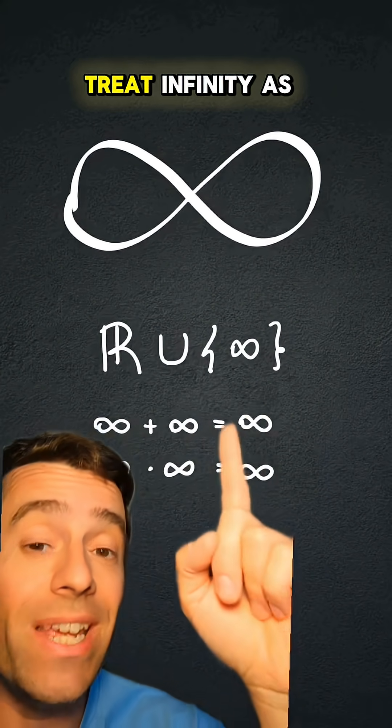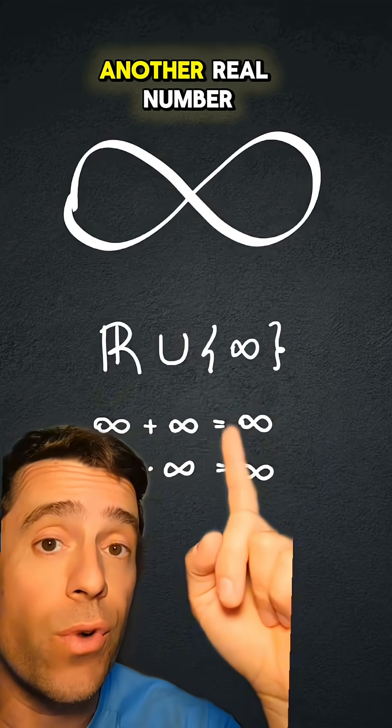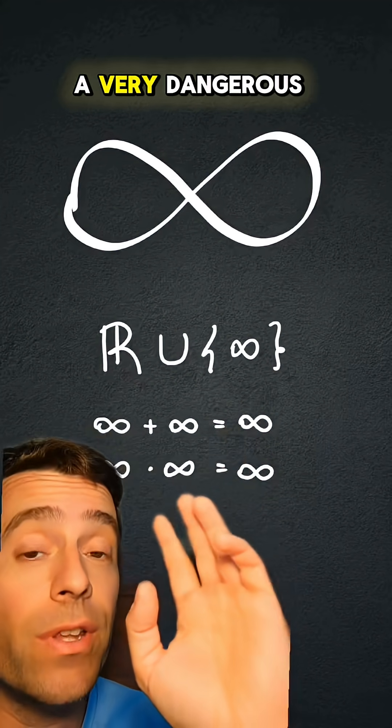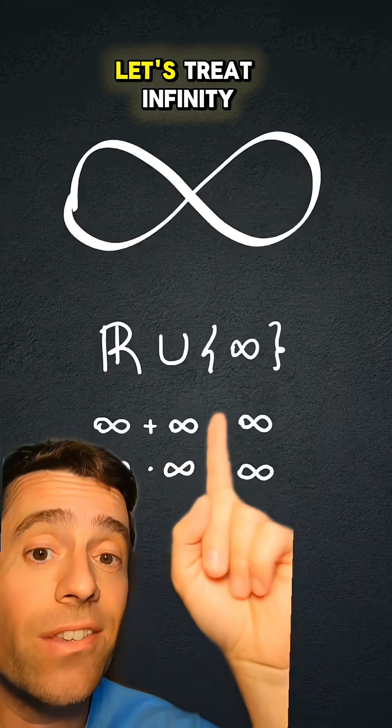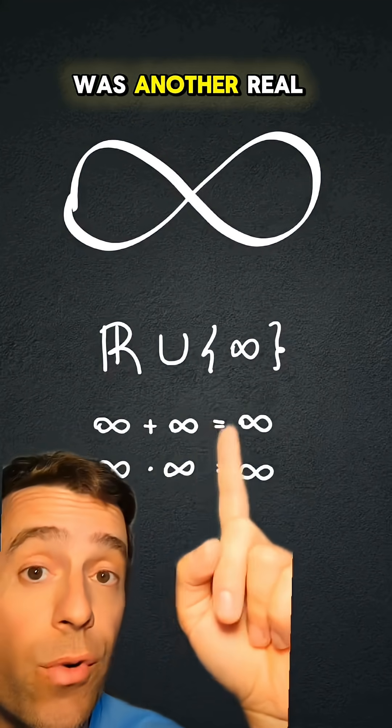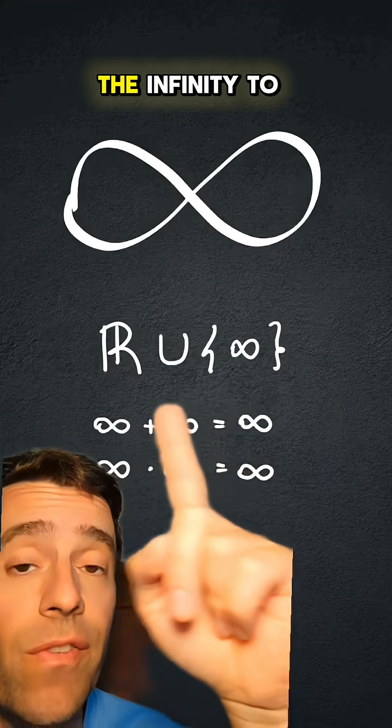what we're going to do is treat infinity as if it was another real number. Now, this is a very dangerous thing to do, but for the sake of this argument, let's treat infinity as if it was another real number. So we are going to adjoin the infinity to the real numbers.